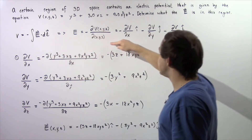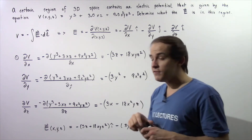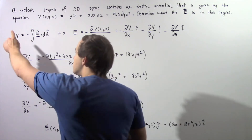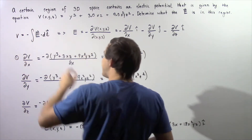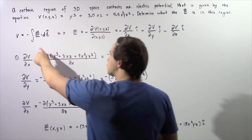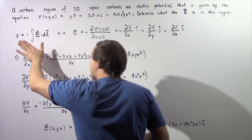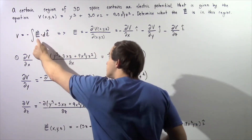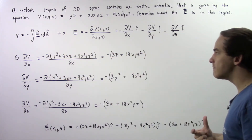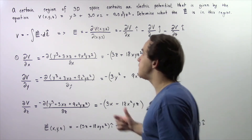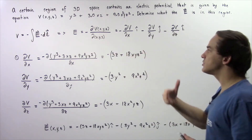We essentially want to apply the following equation that we derived in the previous lecture. We showed that because the voltage difference — the electric potential difference — is equal to the negative of the integral of the dot product of the electric field and our infinitely small displacement dl, we can use it to solve for our electric field. We see that the electric field is equal to the negative of the partial derivative of our voltage, which depends on x, y, and z, with respect to x, y, and z.